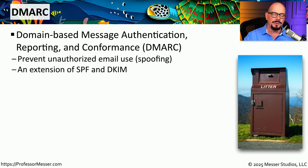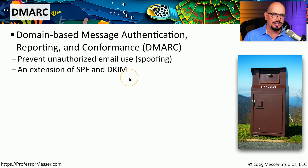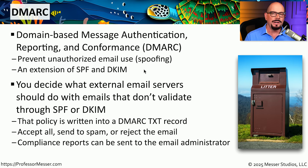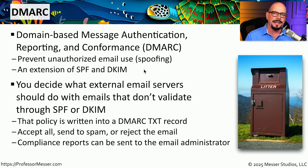If you receive a message from ProfessorMesser.com and the origination email server is not in the SPF list, then you've probably received a message from a third party not associated with our domain. Adding a text record for SPF is similar to adding any other text record — you specify the record type as TXT, the host name would be all hosts or the @ sign, and the content is the appropriate outgoing email server name. Any receiving email server can then perform an SPF check to confirm the message came from a trusted server, and check the digital signature using the public key in the DKIM text record.